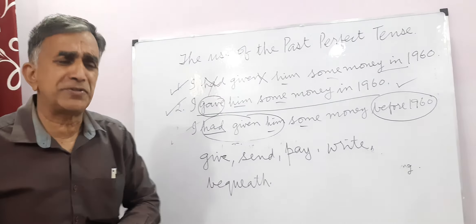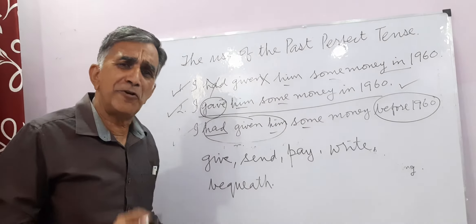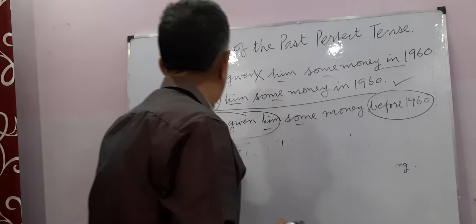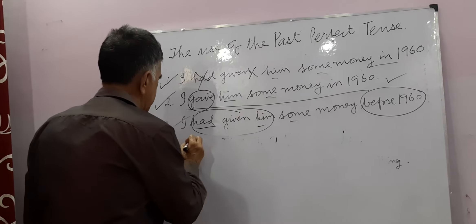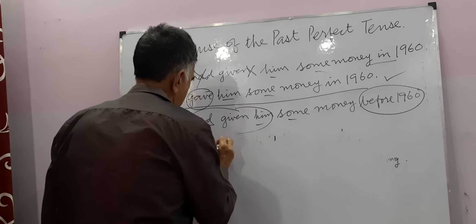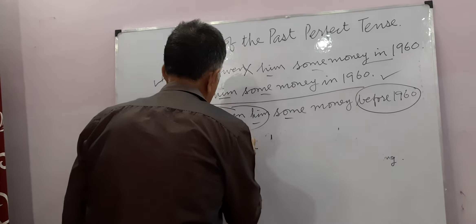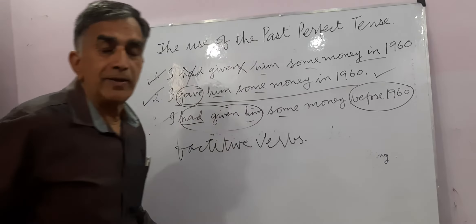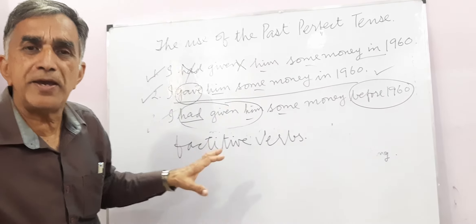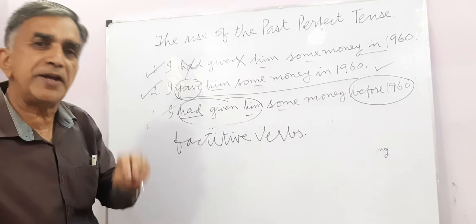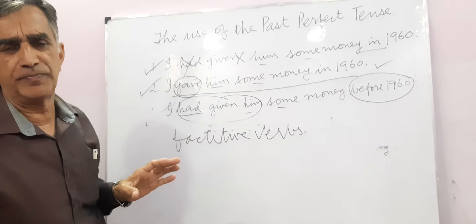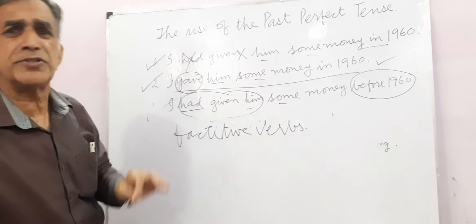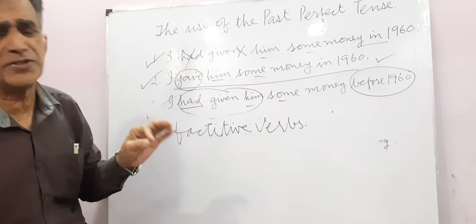There is one more curiosity of the English language where a verb can take two direct objects. These verbs are called in English factative verbs. The verbs give, send, pay, write, bequeath, take an indirect object and a direct object. For example: I wrote John two letters — John is the indirect object, and a letter is the direct object.